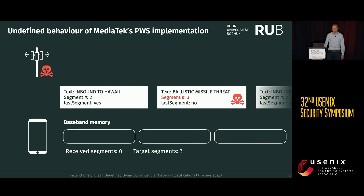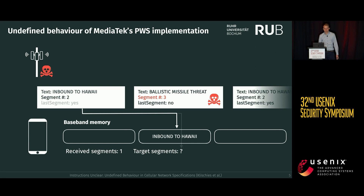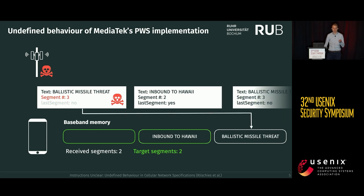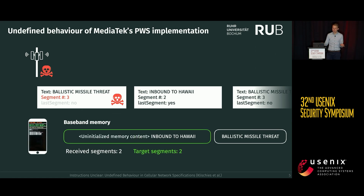Now let's assume a malicious scenario — for instance, a fake base station or somebody injecting additional segments into the stream over the air, which is possible because these messages are not encrypted or authenticated. Assume we start by receiving the second segment first, but the next segment received is labeled as the third segment instead of the first. The baseband stores this in the third slot, but then compares that it has received two segments and needs two. It reassembles the first slot, which was never initialized, with the second slot, leading to an uninitialized read, which triggers an assertion, which crashes the baseband.